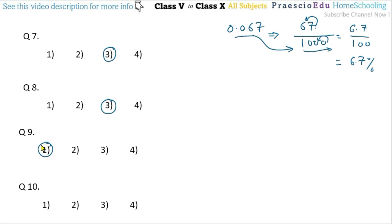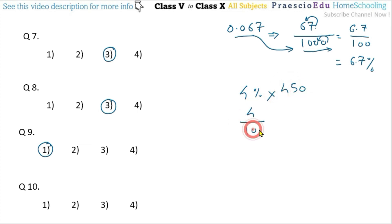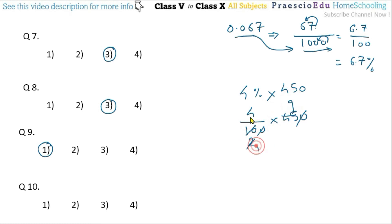Question number 10: 4% of 450. So 4 divided by 100 multiplied by 450. After cancelling zeros, 2 multiplied by 9 equals 18. The answer is 18, given in option number 2. Thank you.